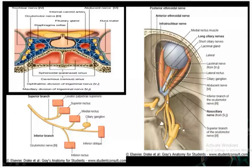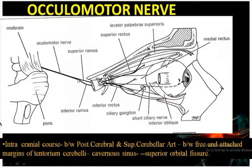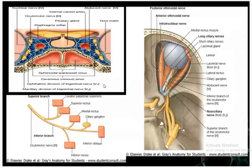Next, it will enter into the orbit through the superior orbital fissure after dividing into the superior and inferior rami. You can see the division after passing through the lateral wall of the cavernous sinus - it divides into the superior ramus and the inferior ramus, and finally enters the orbit through the superior orbital fissure.